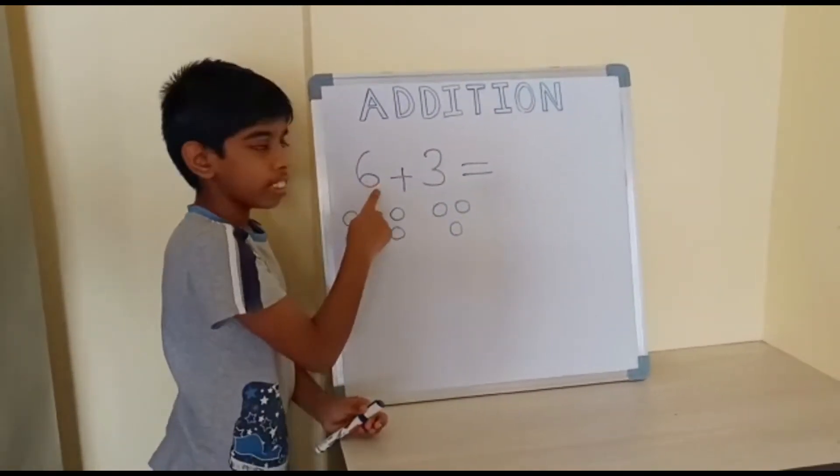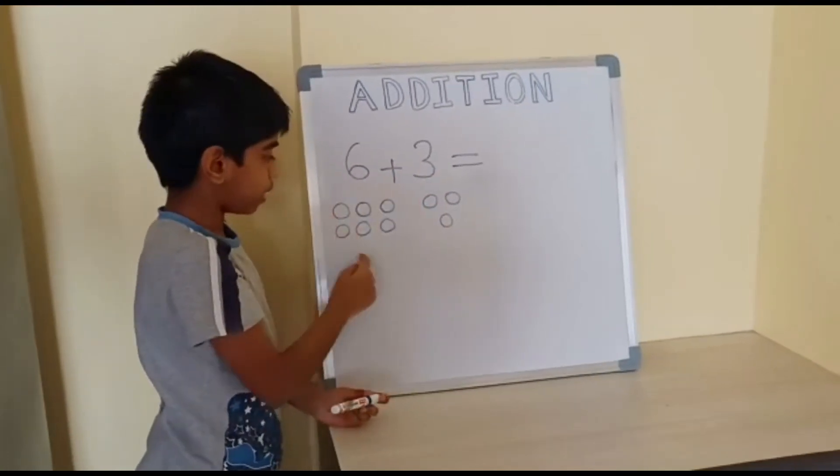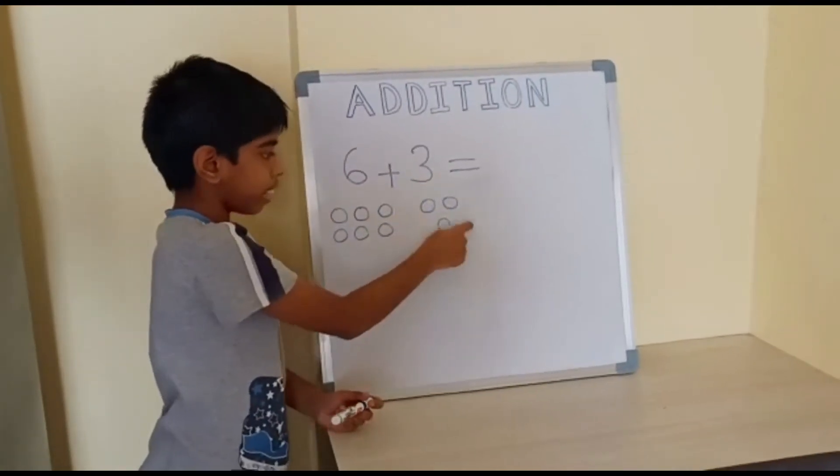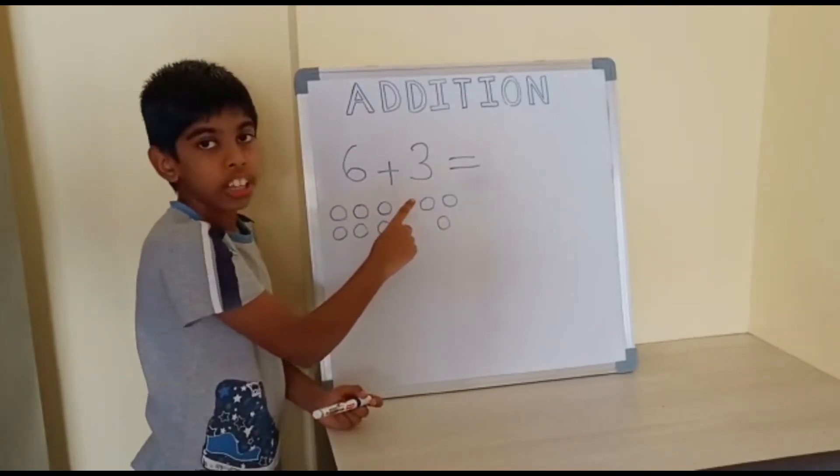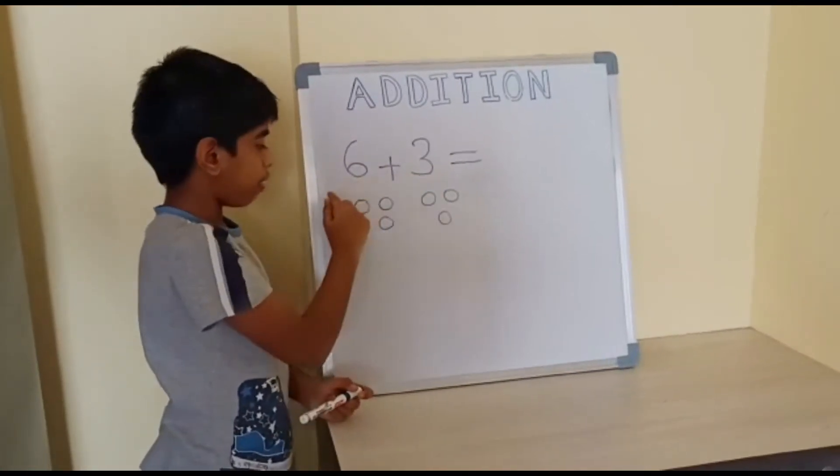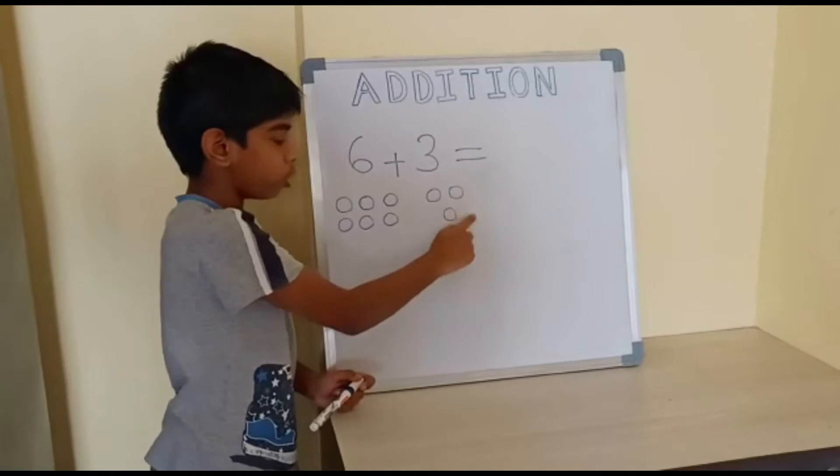The question is 6 plus 3. We have 6 circles here and 3 circles here. Addition means counting together. Now we will count them all.